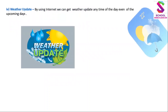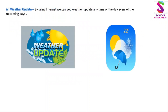उसके बाद आता है — weather update. मौसम के बारे में हमें फटाफट पता चल जाता है, इंटरनेट के ज़रिए. By using internet, we can get weather update any time of the day, even up to the upcoming days. Internet का इस्तेमाल करके हम मौसम की अपडेट ले सकते हैं, मौसम की ताज़ा जानकारी ले सकते हैं, दिन के किसी भी समय, यहाँ तक कि आने वाले दिनों का भी.